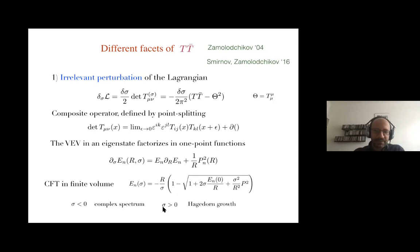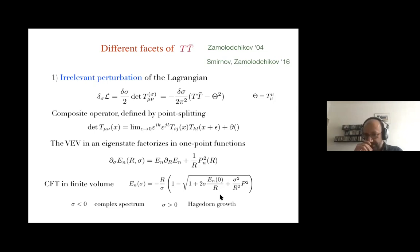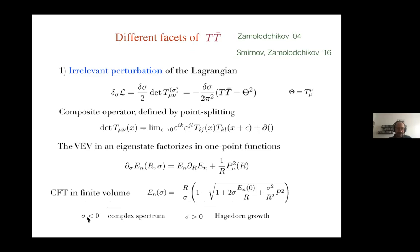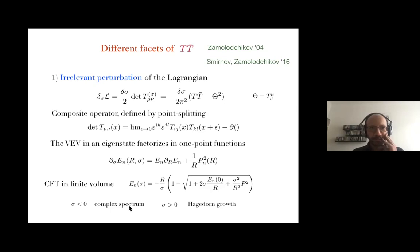Two cases arise according to the sign of the deformation parameter. If σ is positive, you get a Hagedorn growth of states at high energy, so the theory resembles string theory and has some non-locality — the UV theory is no longer a local CFT but is still well-defined. If the parameter is negative, then the argument of the square root becomes negative, giving a complex spectrum and the theory ceases to be well-defined.